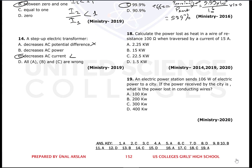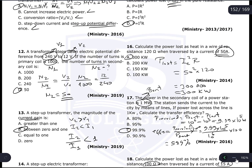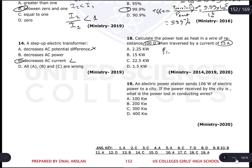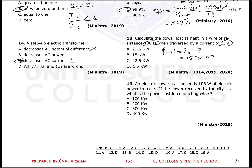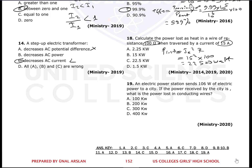Question 18: Calculate the power lost as heat in a wire of resistance 100 ohms carrying a current of 15 amperes. Power lost = I²R = 15² × 100 = 225 × 100 = 22,500 watts = 22.5 kilowatts. The answer is 22.5 kW.